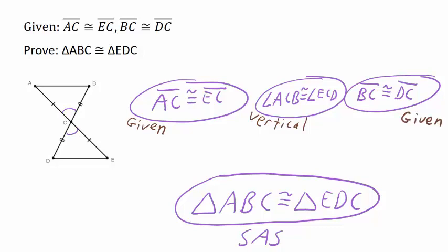Now I will draw the arrows on my flowchart to show the direction of the logic. To use this side, angle, side triangle congruency shortcut, we needed three pieces of information: two pairs of congruent sides and a pair of congruent angles. Notice that we have three bubbles in our flowchart to support our conclusion.